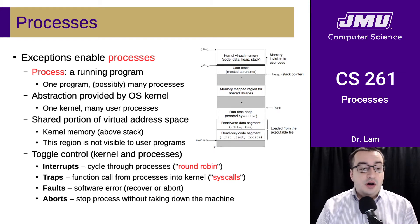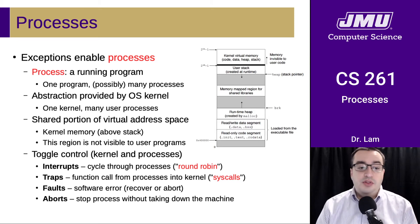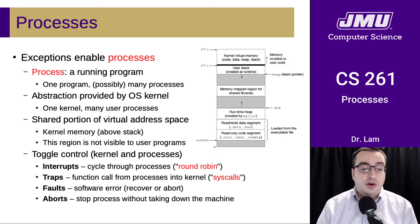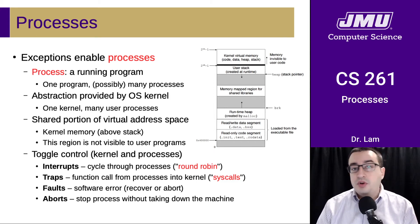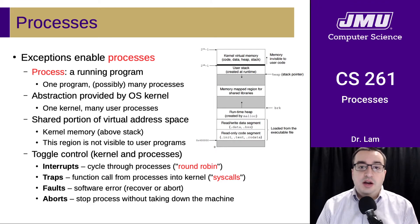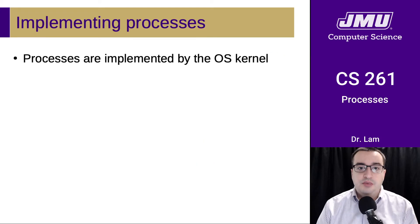There are traps as well. Traps allow communication between processes and the kernel by allowing user processes to make a function call into the kernel — we call these system calls. Faults enable recovery or aborting due to some sort of software error as the program is running. An abort allows the operating system to stop a process without necessarily taking down the machine, if the abort is contained just to that one program.